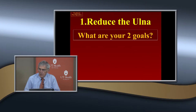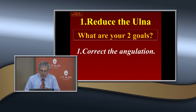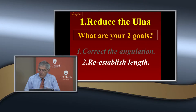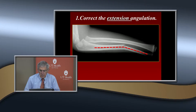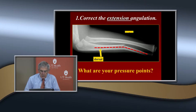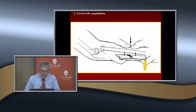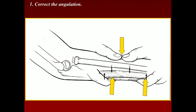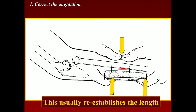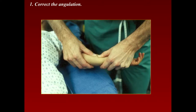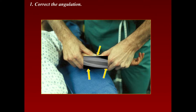The two goals are correction of angulation and reestablishing length. A lot of these are green stick fractures, so you're going to put three-point pressure on it — dorsal, three-point pressure. You flex this deformity and hopefully you'll correct both the angulation and length. Usually when you correct the angulation, that will reestablish the length. Sometimes you have to put three-point pressure on it to get it reestablished.